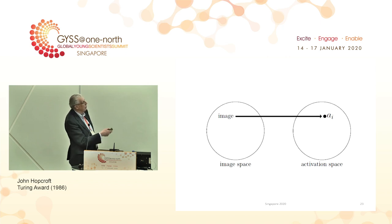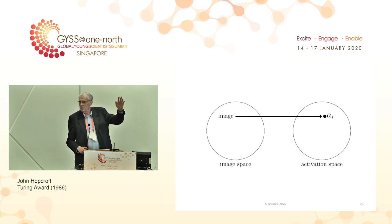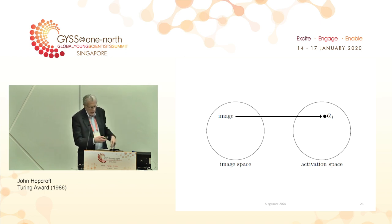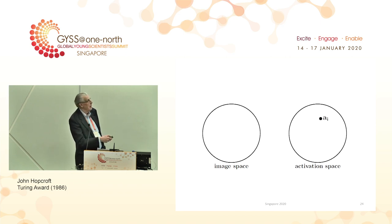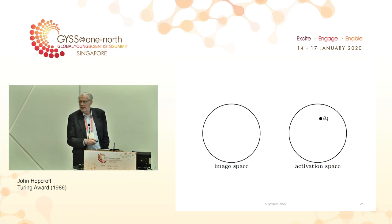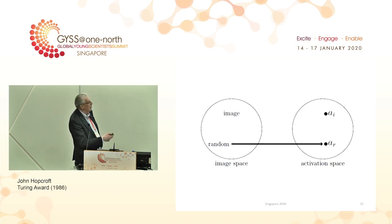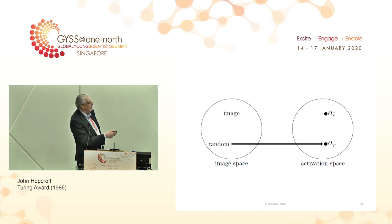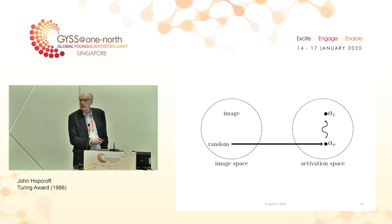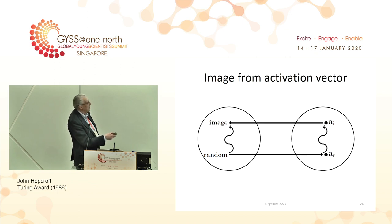One thing you could do is take an image and produce its activation vector — simply put the image into the computer and look at the output of each gate. But what if I gave you an activation vector and asked what image produced it? One approach: take a random image and produce its activation vector, then do gradient descent on the pixels of the random image to move its activation vector toward the target one. What will happen is you will convert your random image to the image that produced that activation vector.